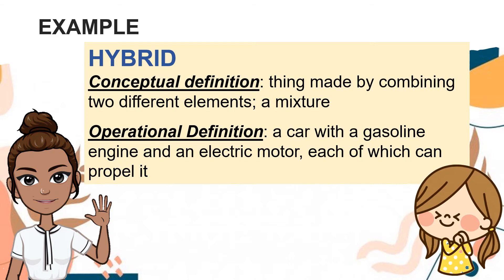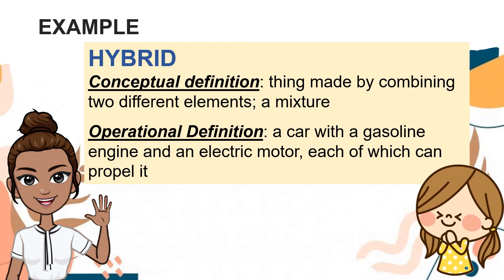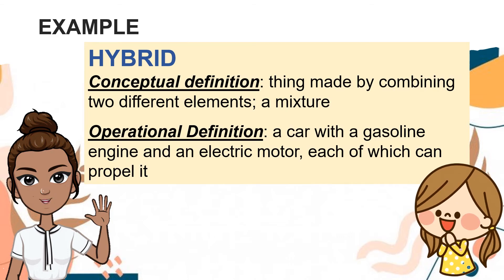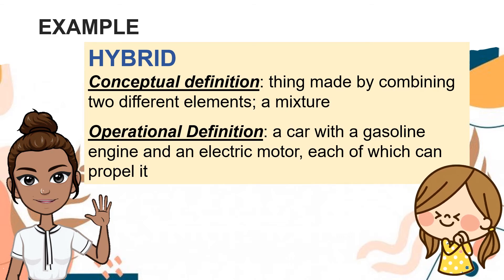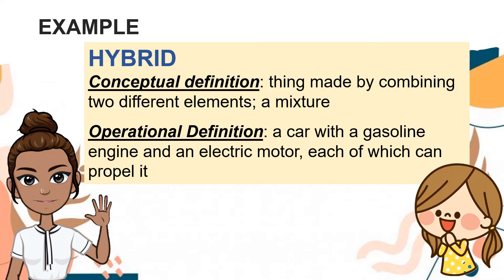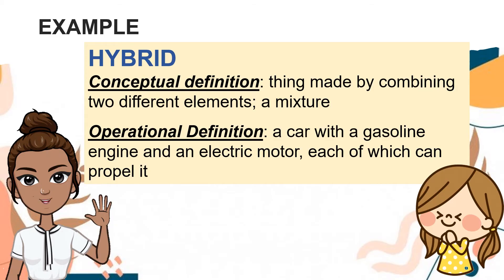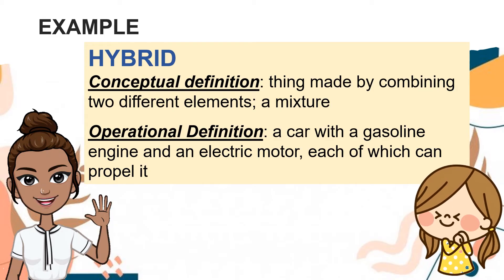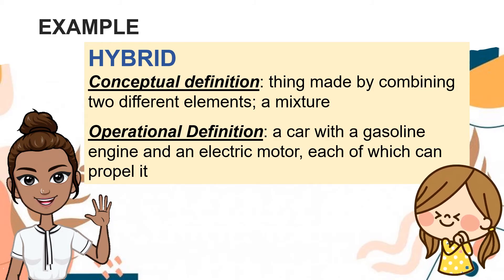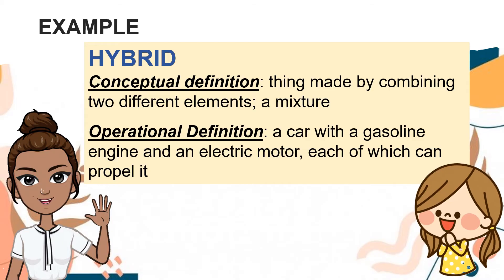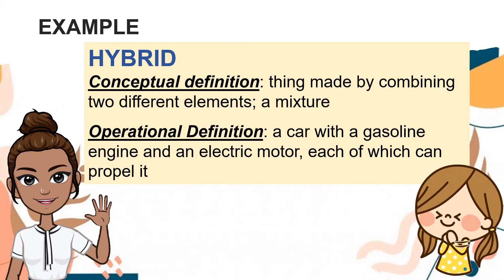The next example is 'hybrid.' For its conceptual definition, it is a thing made by combining two different elements, or a mixture. For the operational definition, it is a car with a gasoline engine and an electric motor, each of which can propel it.